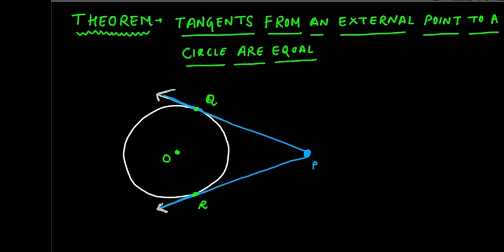Basically what this means is that if there is a point in the exterior of a circle, and from that point you are drawing two tangents to the circle, as you can see in this figure, then the length of those two tangents will be equal.